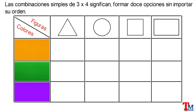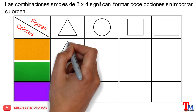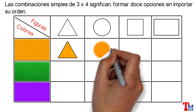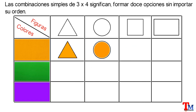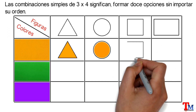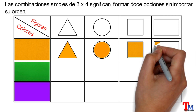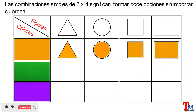Combinando el color amarillo con el triángulo, obtenemos una opción. Combinando el color amarillo con el círculo, tenemos otra. Combinando el color amarillo con el cuadrado, tenemos otra. Y combinando el color amarillo con el rectángulo, tenemos la última de este color. De forma similar, procederemos para el siguiente color.